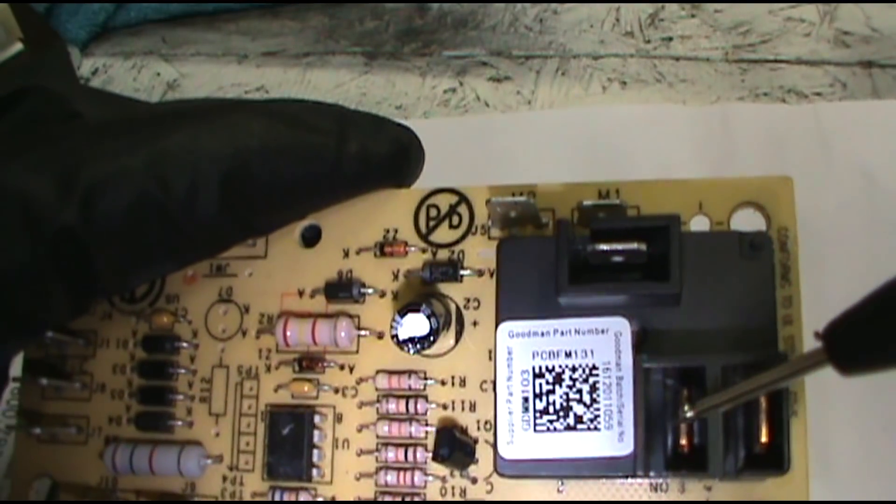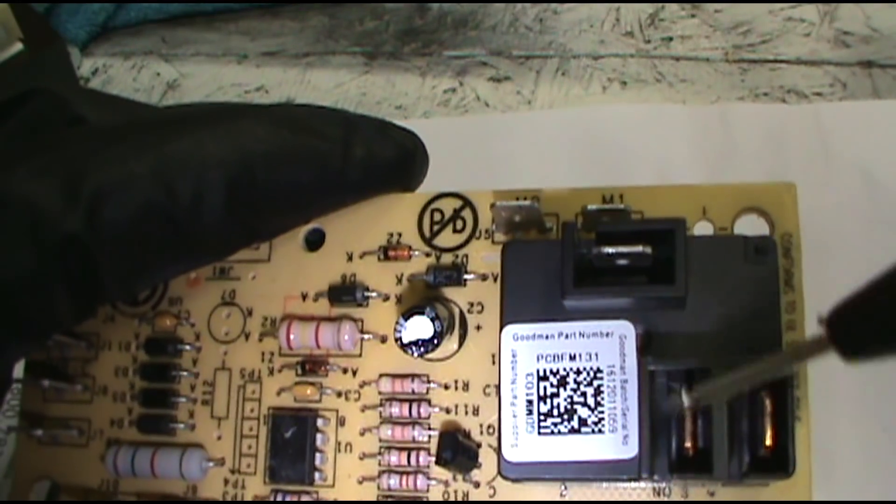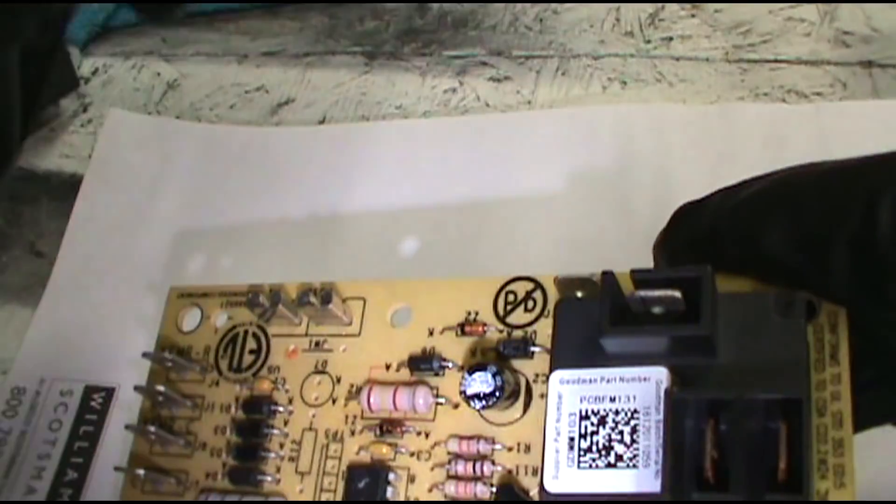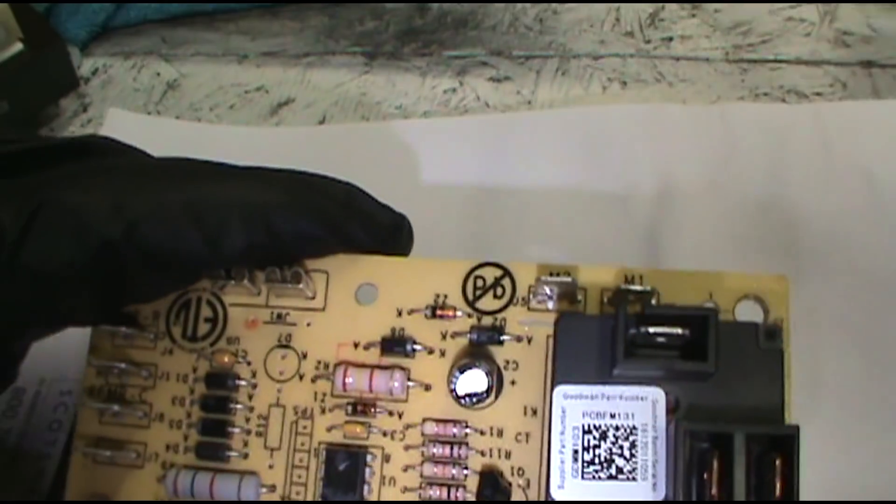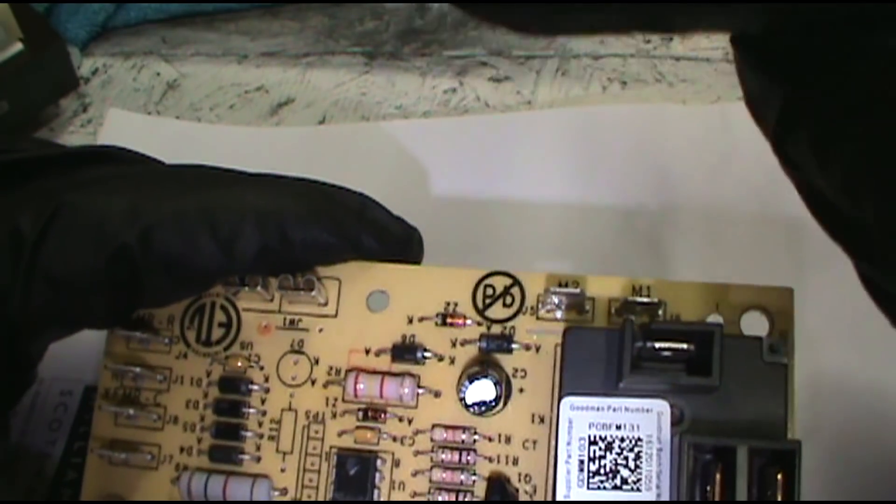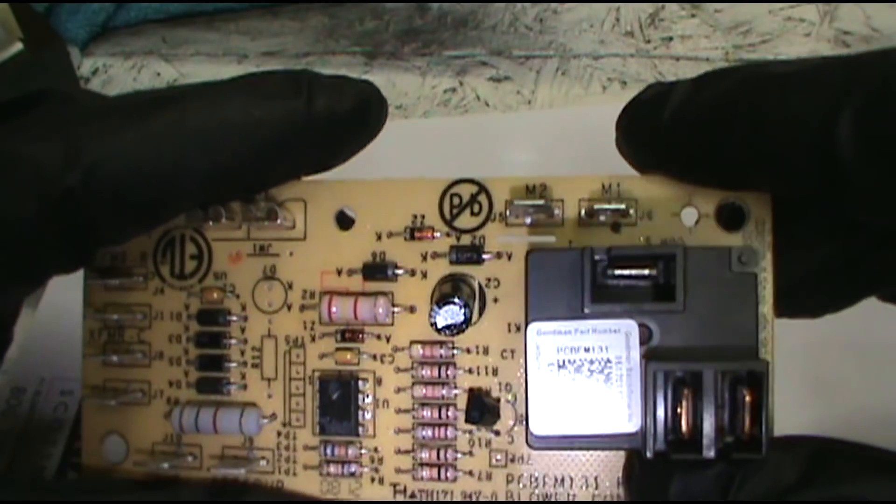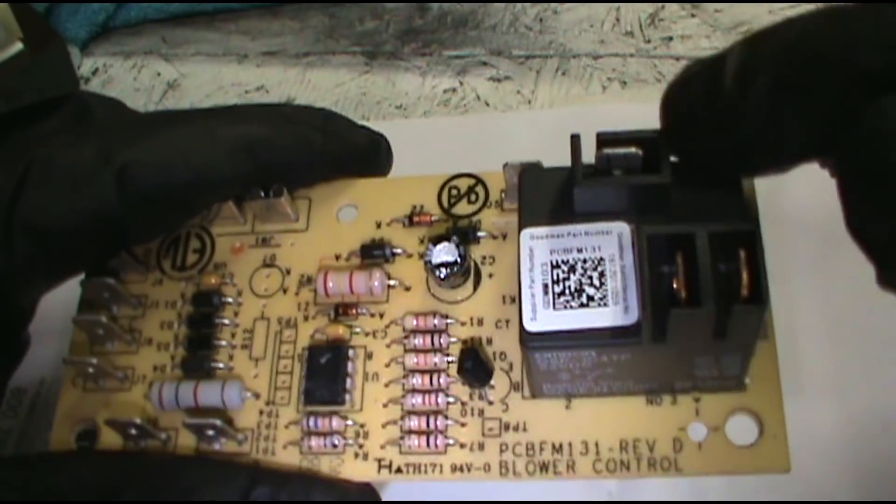Now if the switch gets stuck open and it won't close, then the fan won't come on at all. And I've also seen a guy, he pulled the common wire out and stuck it onto the lug of the power, the power lug for the air handler, and the fan came on. And that's how he troubleshooted this being bad.